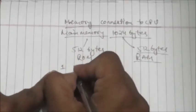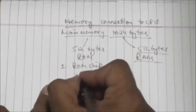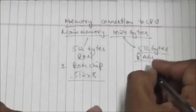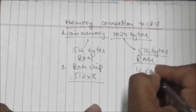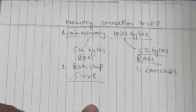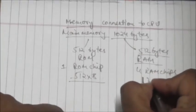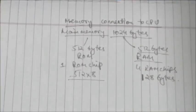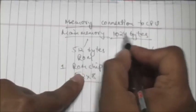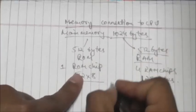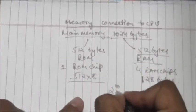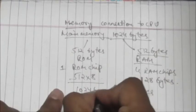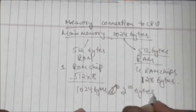There is one single ROM chip capable of storing 512 bytes, and there are four RAM chips each capable of storing 128 bytes. The main memory stores 1024 bytes, which means 2 raised to power 10 bytes.